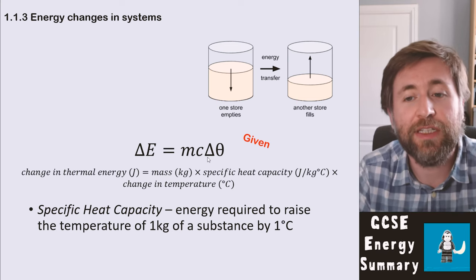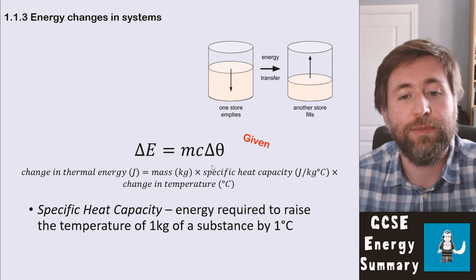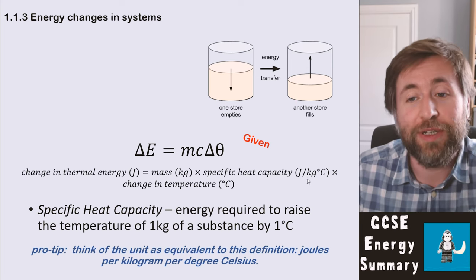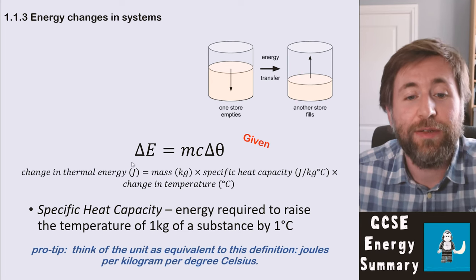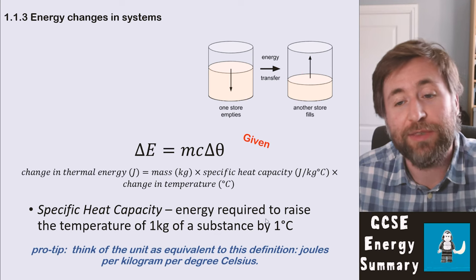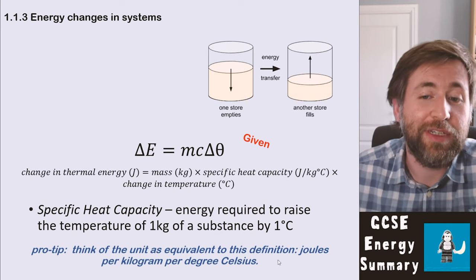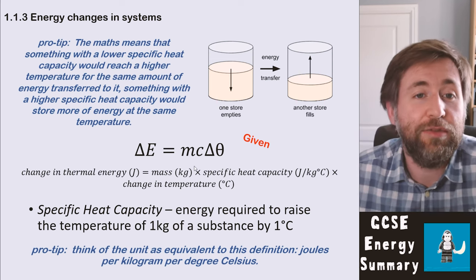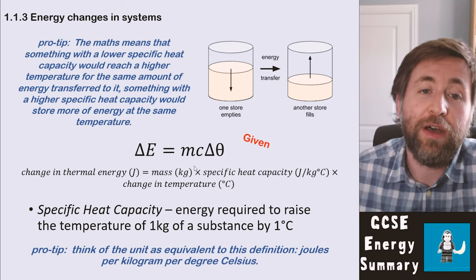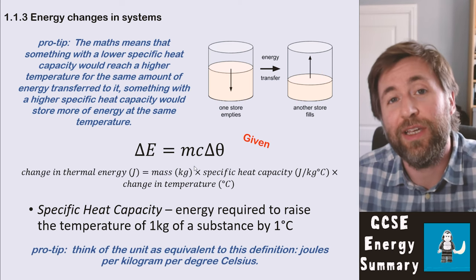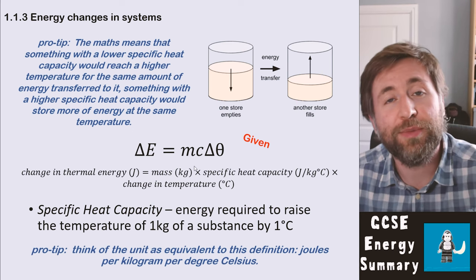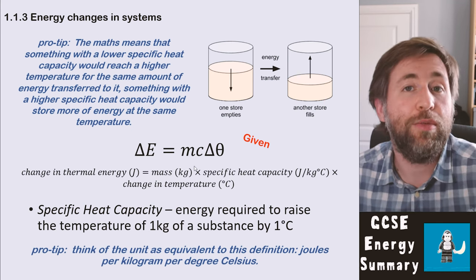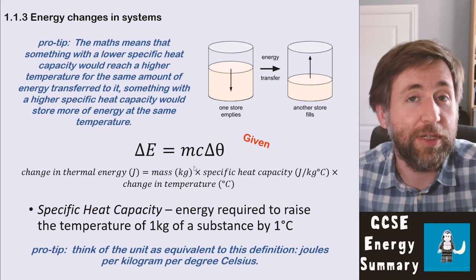Memorize the definition of specific heat capacity: the energy required to raise the temperature of one kilogram of a substance by one degree Celsius. Notice this is exactly the same as its unit: J/kg/°C — energy per kilogram per degree Celsius. Something with a lower specific heat capacity reaches a higher temperature for the same energy input. For example, copper has a lower specific heat capacity than water, so if you put the same amount of energy into copper as into water, the copper reaches a higher temperature.